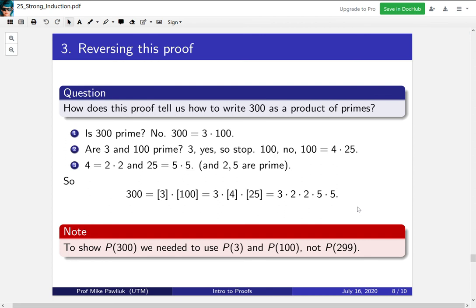Now one thing to point out is that when we were trying to show that P(300) was true, or to find the decomposition of 300, we needed to use P(3) and P(100), not P(299). So in simple induction we would go down one step to 299, but in strong induction we had to use things that were much earlier and sort of halfway in between. This is one of the hallmarks of using strong induction.